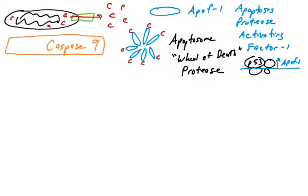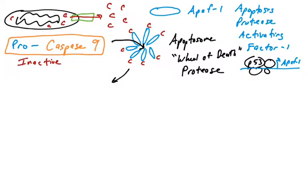Let us introduce a new protein: caspase-9. Caspase-9 is a protein found in the cytoplasm. The name 'caspase' hints that it is an enzyme. When it is synthesized, it has an inhibitory domain on it, so it is typically first made in its pro form — pro-caspase-9. The apoptosome will bind pro-caspase-9 and cleave it, removing the inhibitory domain. You are left with active caspase-9, whose catalytic activity is now isolated from the inhibitory domain.